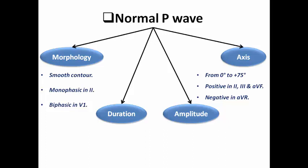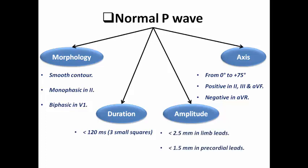Because of this axis, the P wave is usually positive in leads 2, 3, and AVF — the inferior leads — and negative in AVR. Regarding duration, it is less than 120 ms, which equals 3 small squares. Regarding amplitude, it is less than 2.5 mm in limb leads and less than 1.5 mm in precordial leads, so it is shorter in precordial leads than in limb leads.